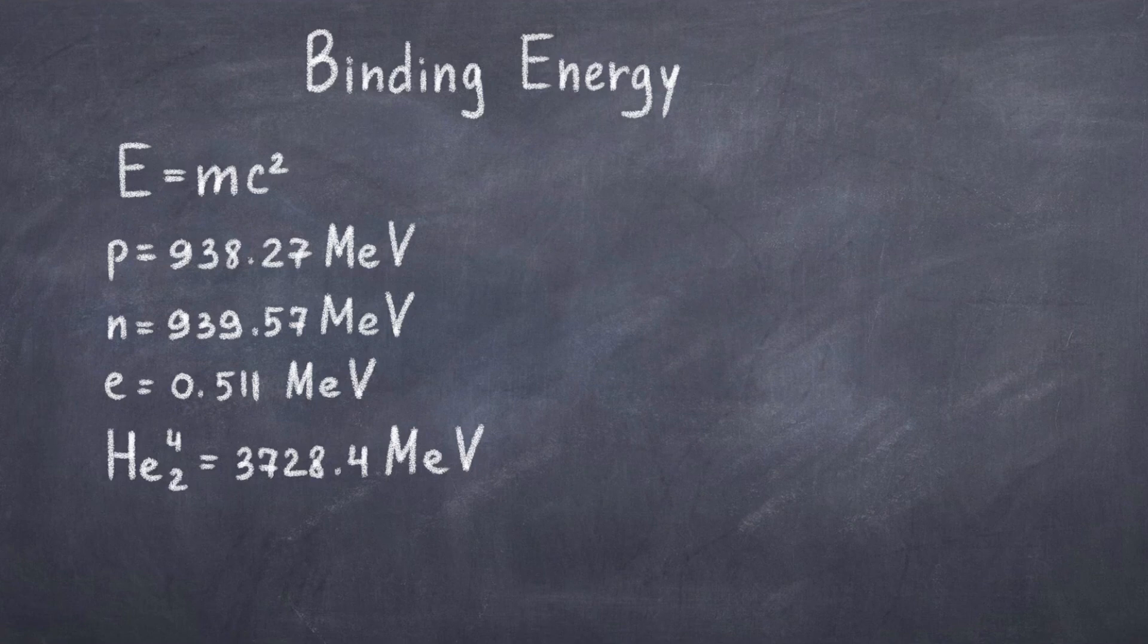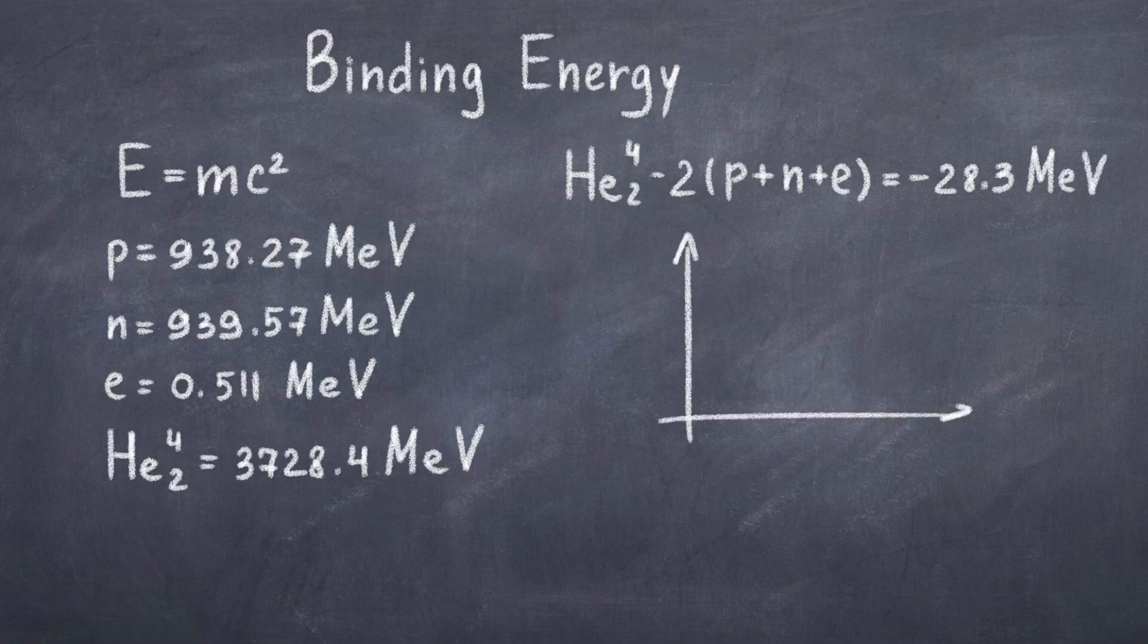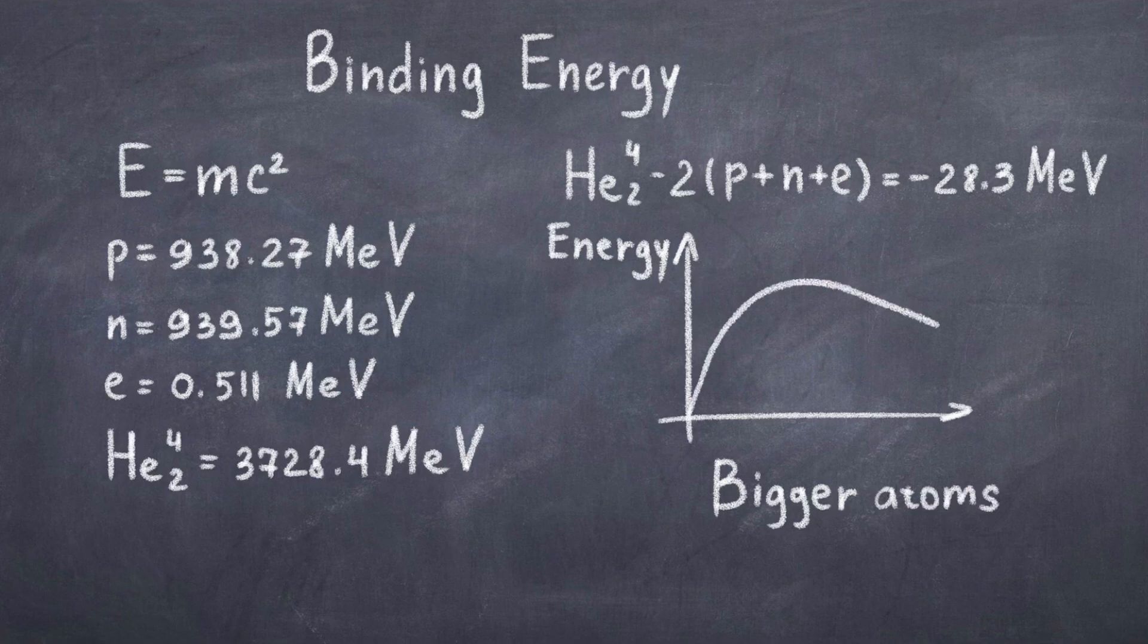If we take the mass of the helium-4 atom and subtract its constituent particles, we find that helium-4 minus 2 protons, 2 neutrons and 2 electrons is equal to minus 28.3 mega electron volt. Where p is protons, n is neutrons and e is electrons. We thus see that there is around 28 mega electron volt binding energy in regular helium-4.